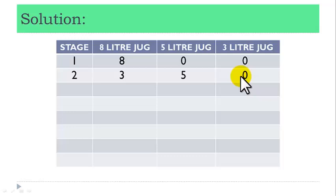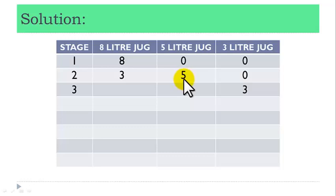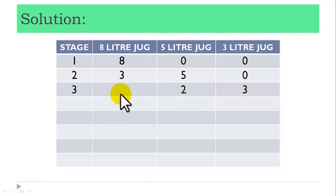Stage 3: fill the 3-liter jug with fluid from the 5-liter jug. Then we are left with 2-liter fluid in the 5-liter jug, while we still have 3-liter fluid in the 8-liter jug.